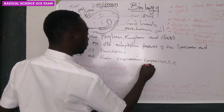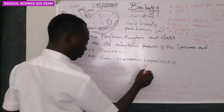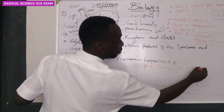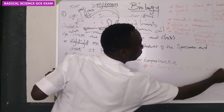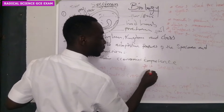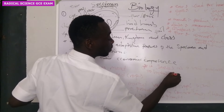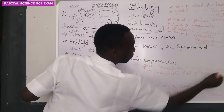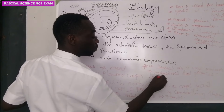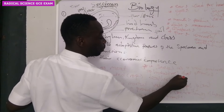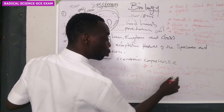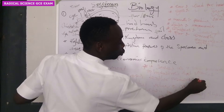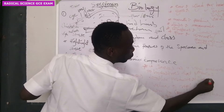The sixth point: it serves as a raw material to industries that produce leather products, for example shoes.